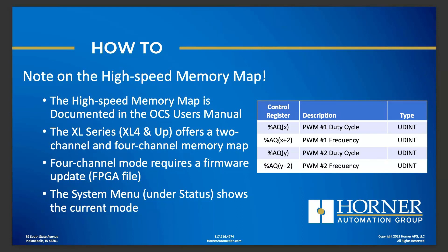Whenever working with high-speed counters or high-speed outputs, you need to know which real-world I/O registers — I's, Q's, AI's, and AQ's — are being used. To find those specific values, go to the user's manual for your particular OCS. For example, on the XL4, go to the Horner website, find the XL4 product page, look under documentation for the full user's manual, and you'll find a complete chapter on high-speed I/O functions including high-speed output functions, with charts and tables showing which real-world I/O registers are assigned to those functions.